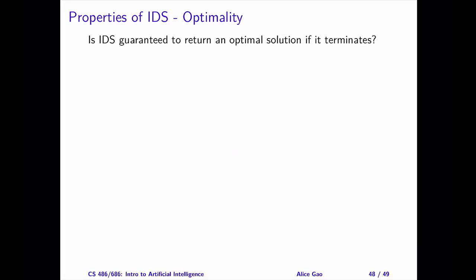Finally, let's look at optimality. Similar to other uninformed search algorithms, IDS does not pay any attention to the edge costs. Therefore, it makes no guarantee on the quality of the solution found. However, since IDS increases the depth limit by one each time, it can achieve the same weaker property as BFS. IDS is guaranteed to find the shallowest goal node. If every edge has the same cost, IDS is guaranteed to return the optimal solution.